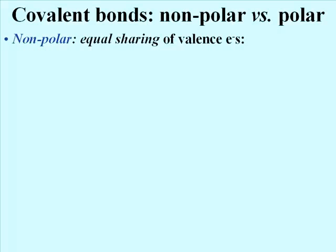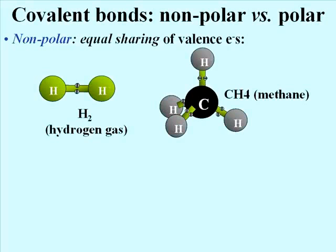Covalent bonds may also be nonpolar or polar. When atoms share their valence electrons equally, they form nonpolar covalent bonds, as in the hydrogen and methane gas molecules shown here.